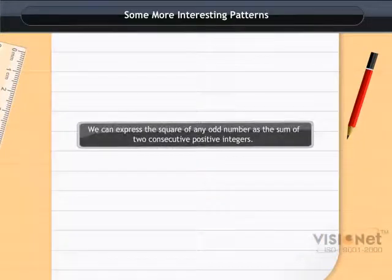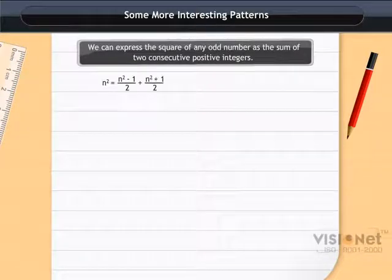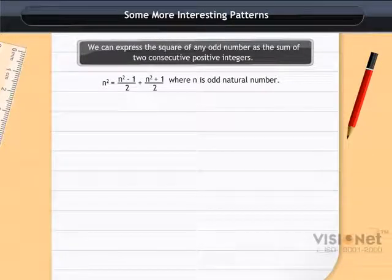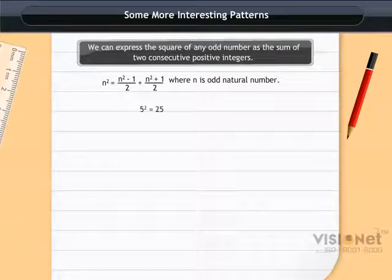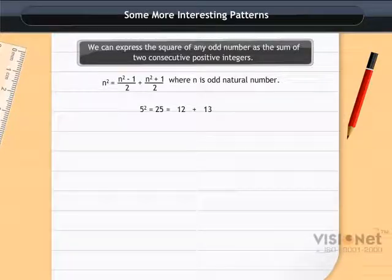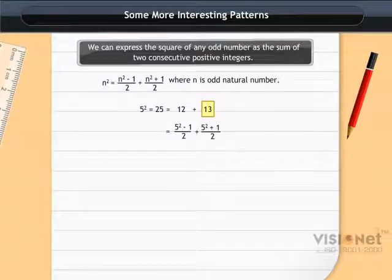We can express the square of any odd number as the sum of two consecutive positive integers. That is, if n is any odd natural number, then n squared equals (n squared minus 1) upon 2, plus (n squared plus 1) upon 2. For example, 5 squared is 25, and we can write 25 as 12 plus 13, where 12 equals (5 squared minus 1) upon 2 and 13 equals (5 squared plus 1) upon 2.